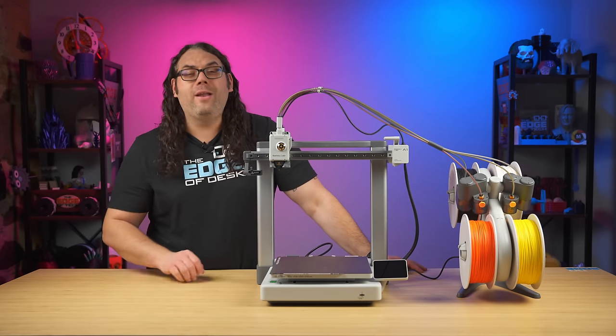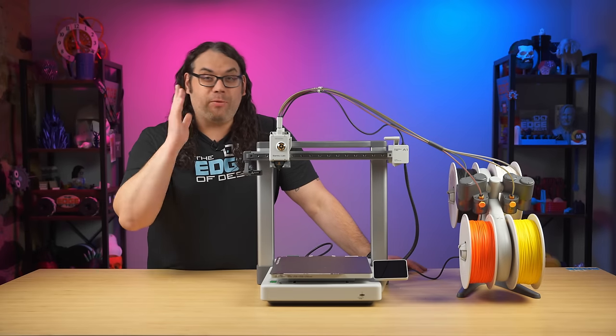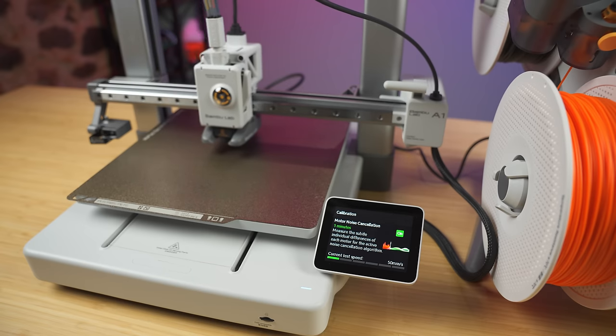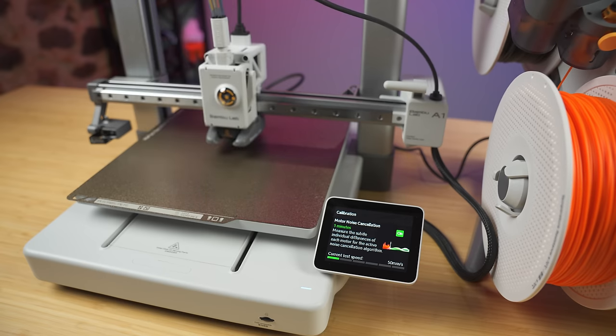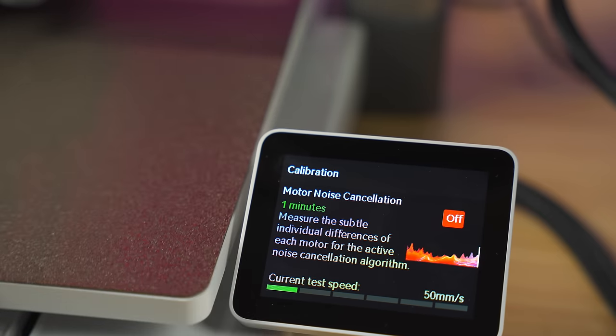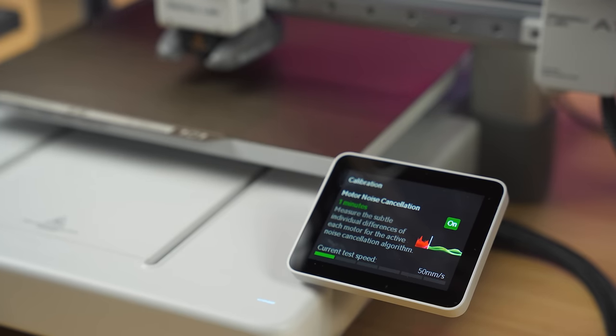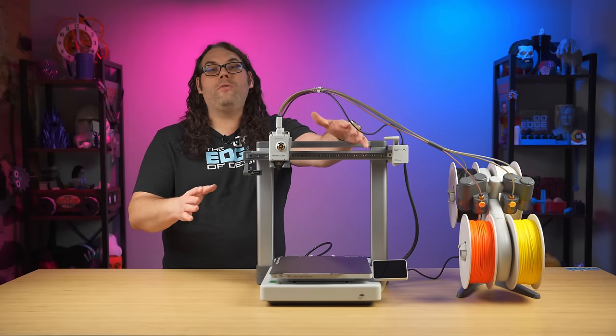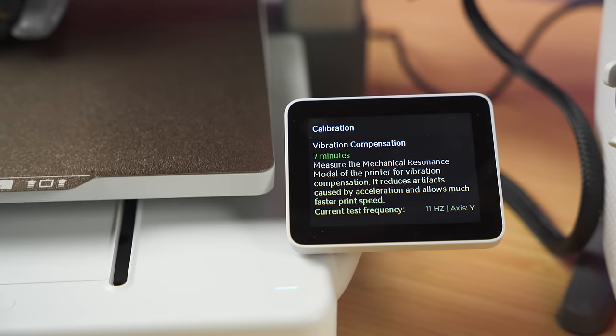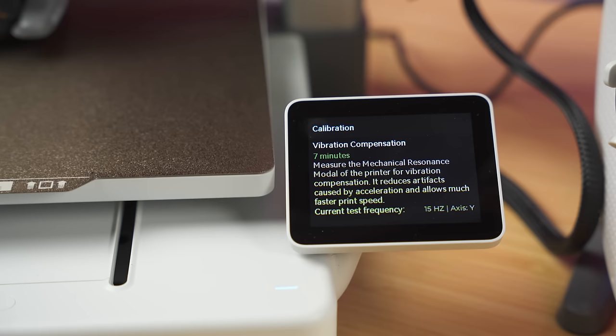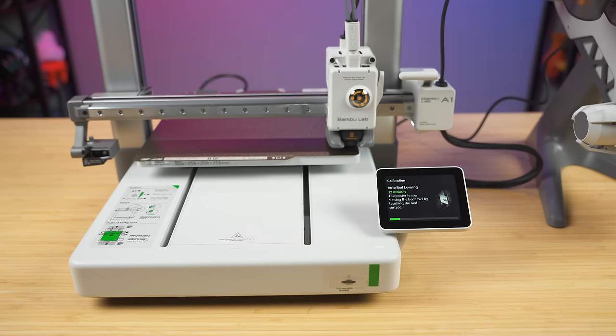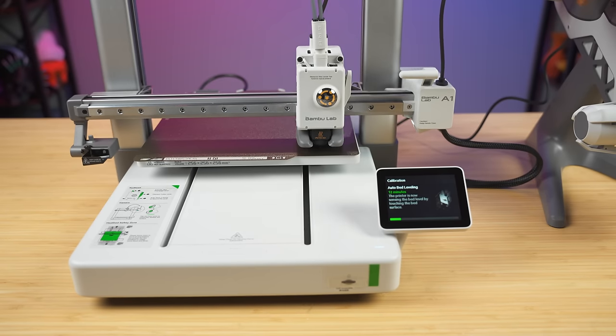I haven't even come close to talking about the coolest features. This printer pretty much does everything for you. When you first run the setup, it goes through a noise cancellation process, which sweeps through frequencies of the stepper motors and really quiets this thing down. Then before every single print, it runs a vibration calibration. Most printers do this one time, but the A1 actually does it before every single print. That will account for the belt tension and the temperature in the room to make sure that you get the best prints possible.